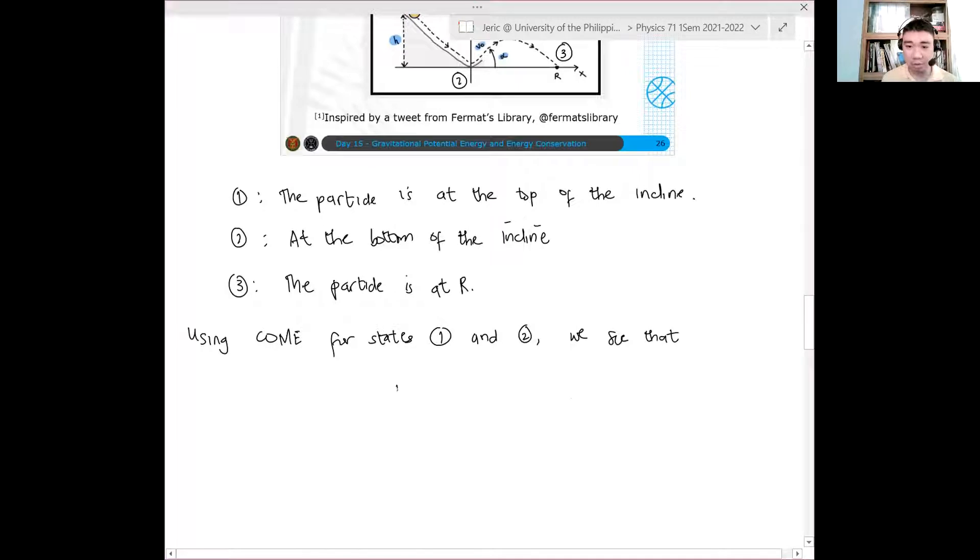So we have E1 equals E2. And thus, this means that we have one half M V1 squared plus M G Y1 equals one half M V2 squared plus M G Y2. Our V2 here is the initial velocity of the particle. Pag niluncio siya in the projectile, as a projectile. So this V2 here is the initial velocity of the projectile.